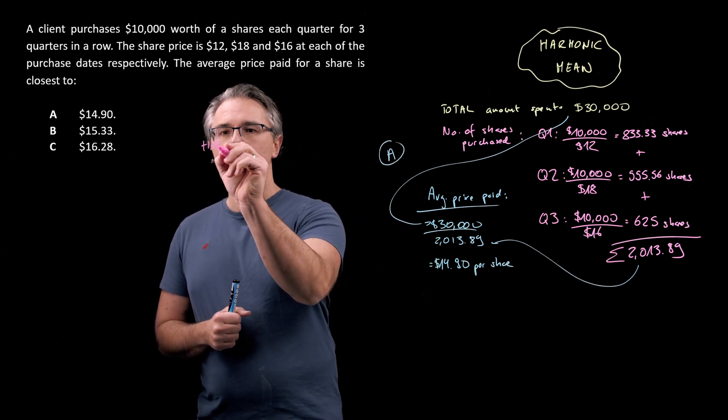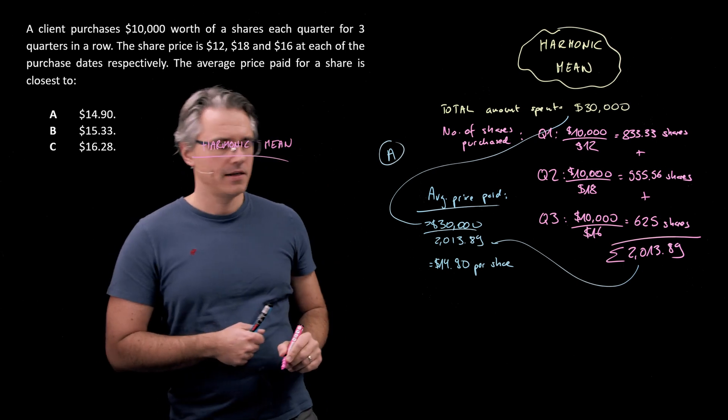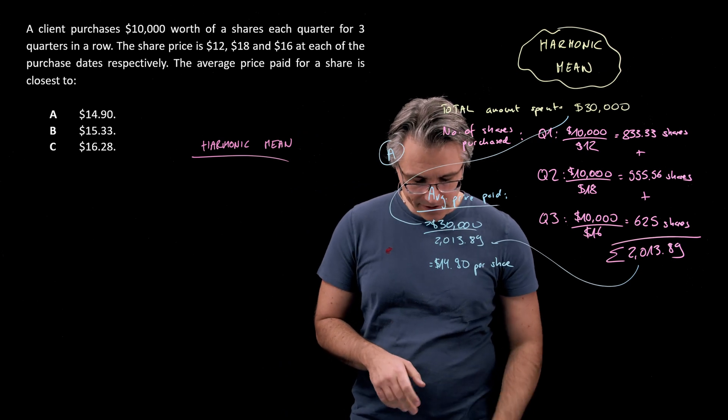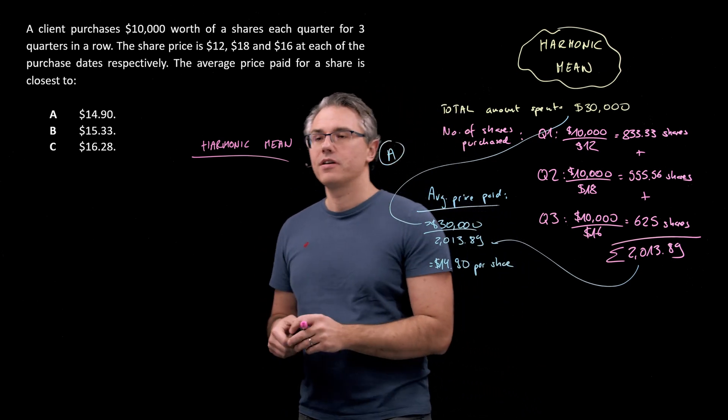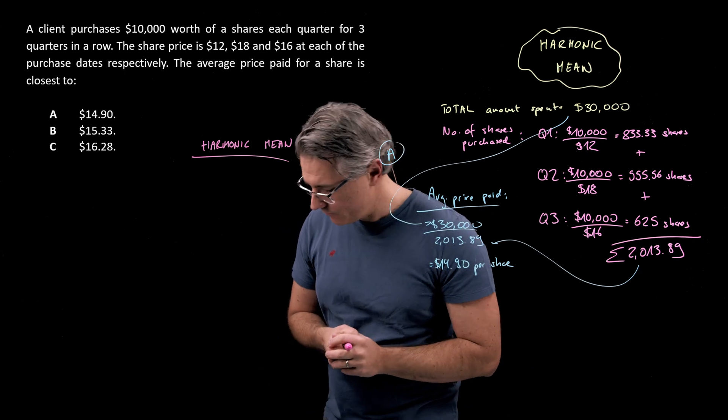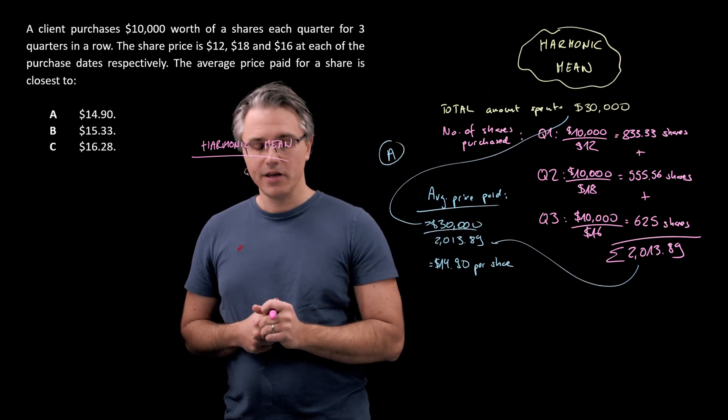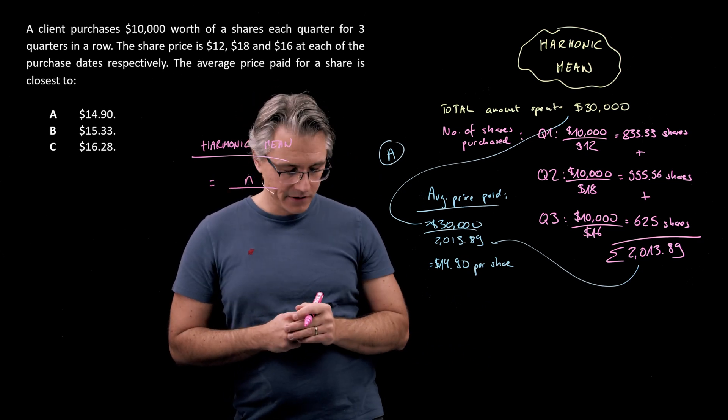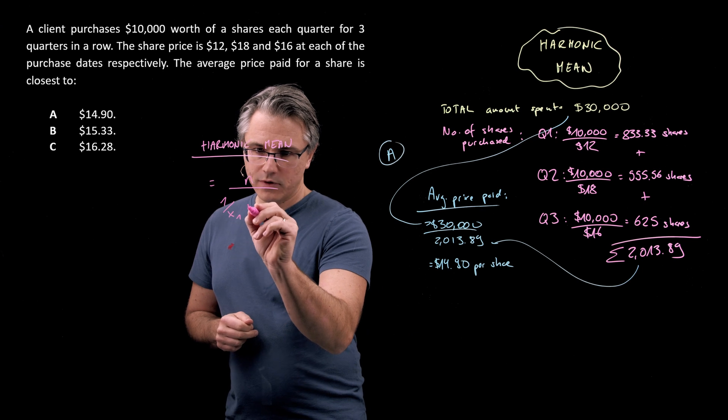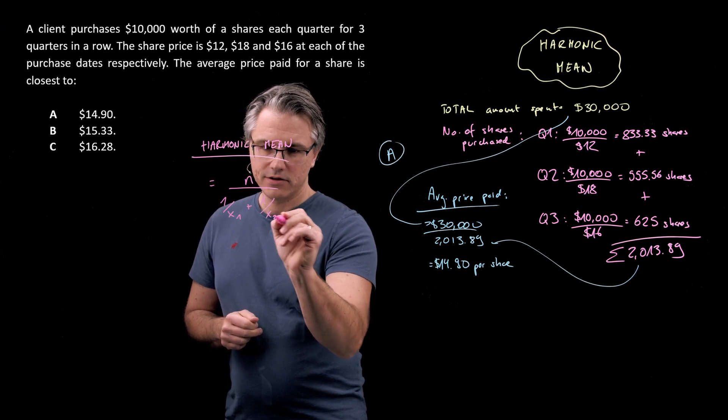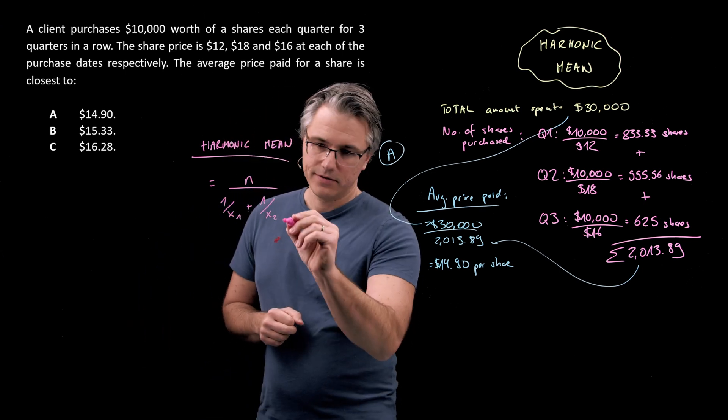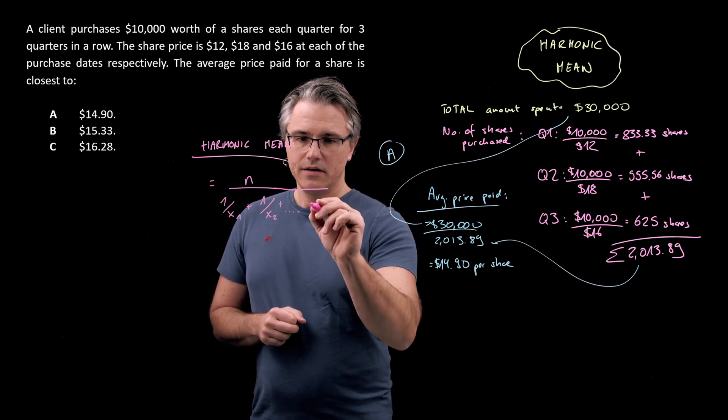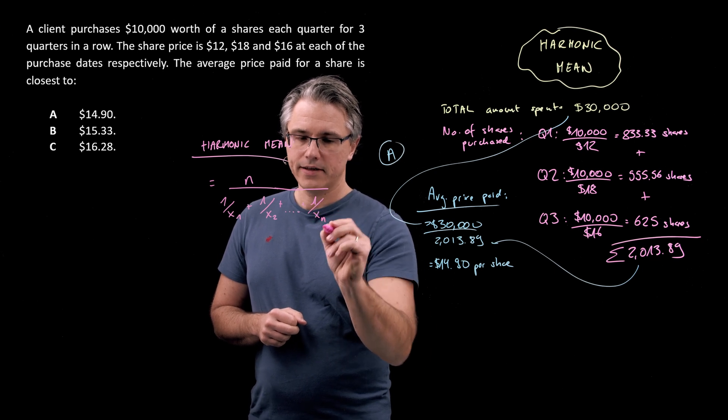So harmonic mean. This works when somebody is spending an equal amount periodically to buy securities, shares, which are going to be priced differently from period to period. The formula for this is N divided by 1 over X1 plus 1 over X2, and ultimately 1 over XN.